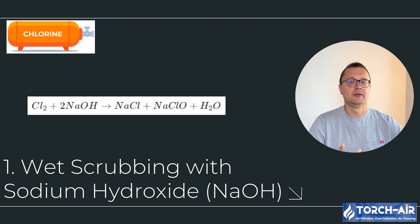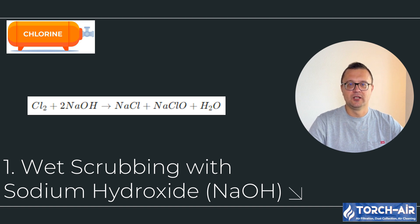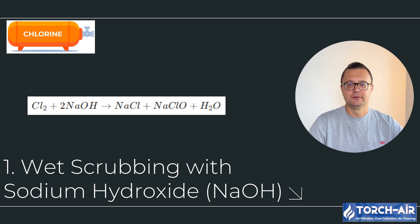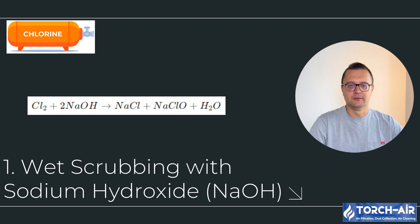Neutralizing chlorine gas typically involves chemical reactions with alkaline substances that convert the chlorine into less harmful byproducts. The two main neutralization techniques used in scrubber systems are: first, wet scrubbing with sodium hydroxide (NaOH). This is the most common neutralization method for chlorine gas. The NaOH solution reacts with chlorine gas to form sodium chloride (NaCl) and sodium hypochlorite (NaClO) — much safer compounds. Contaminated air is passed through a scrubber where it meets a sodium hydroxide solution, converting chlorine into salt and water. Best for continuous industrial applications with consistent chlorine gas emissions.